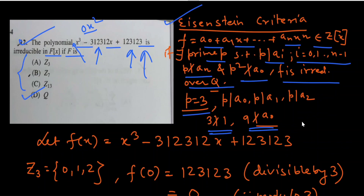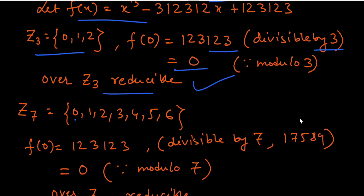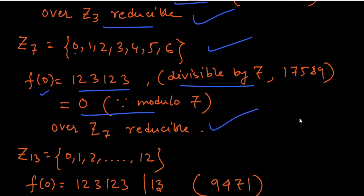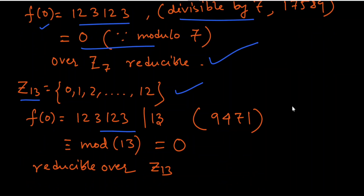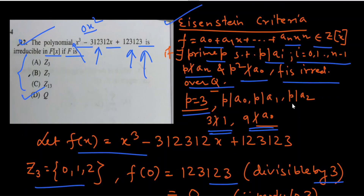If we take Z₃ = {0, 1, 2}, then f(0) equals this value which is divisible by 3, giving 0, therefore it is irreducible over Z₃. For Z₇ = {0, 1, 2, ..., 6}, f(0) is again divisible by 7, so it is also irreducible over Z₇. Similarly for Z₁₃ = {0, 1, 2, ..., 12}, f(0) is divisible by 13, so it is also irreducible over Z₁₃. These three options are discarded and the polynomial is irreducible over Q only — the correct answer is option D.